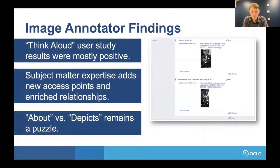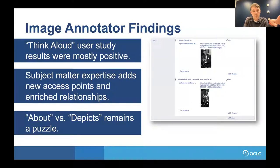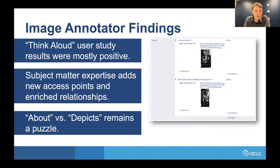In working with this, we did think-aloud studies and got feedback on the image annotator, which was positive but also indicative that this is cutting-edge work. The distinction between 'about' versus 'depicts' remains a puzzle — what does this actually mean, and what are the ramifications on decades' worth of curating digitized cultural heritage materials?